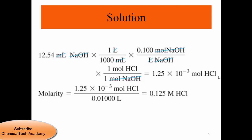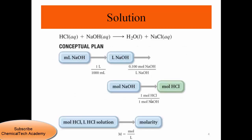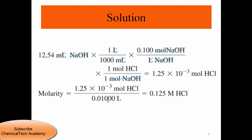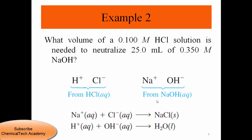This gives us 1.25 × 10⁻³ moles of acid needed to neutralize 1.25 × 10⁻³ moles of base. Dividing by the volume of HCl — 10 mL converted to 0.01 liters — we find the molarity of HCl is 0.125 molar.